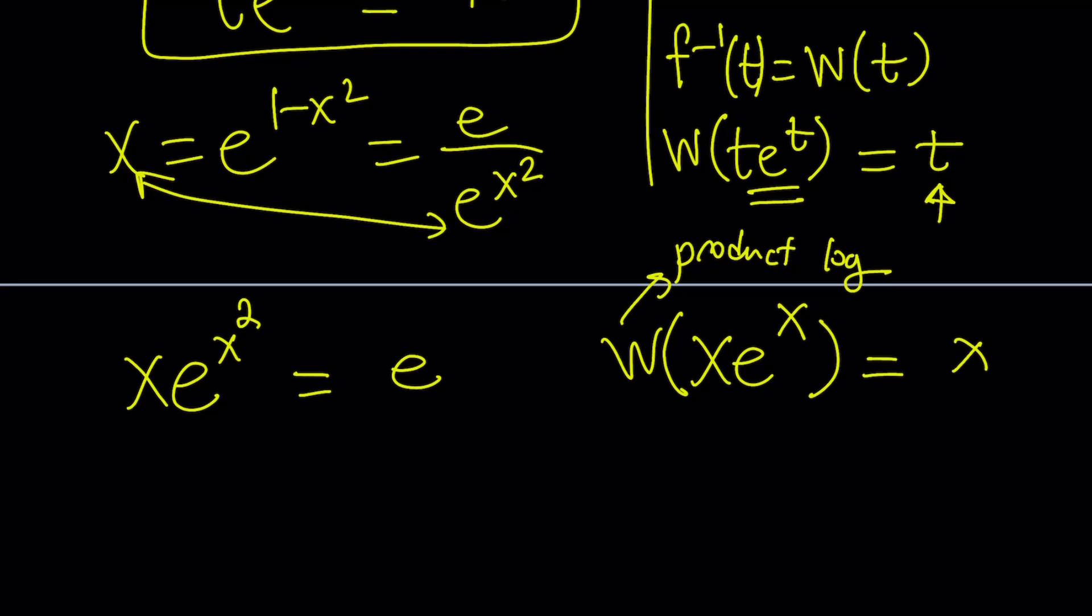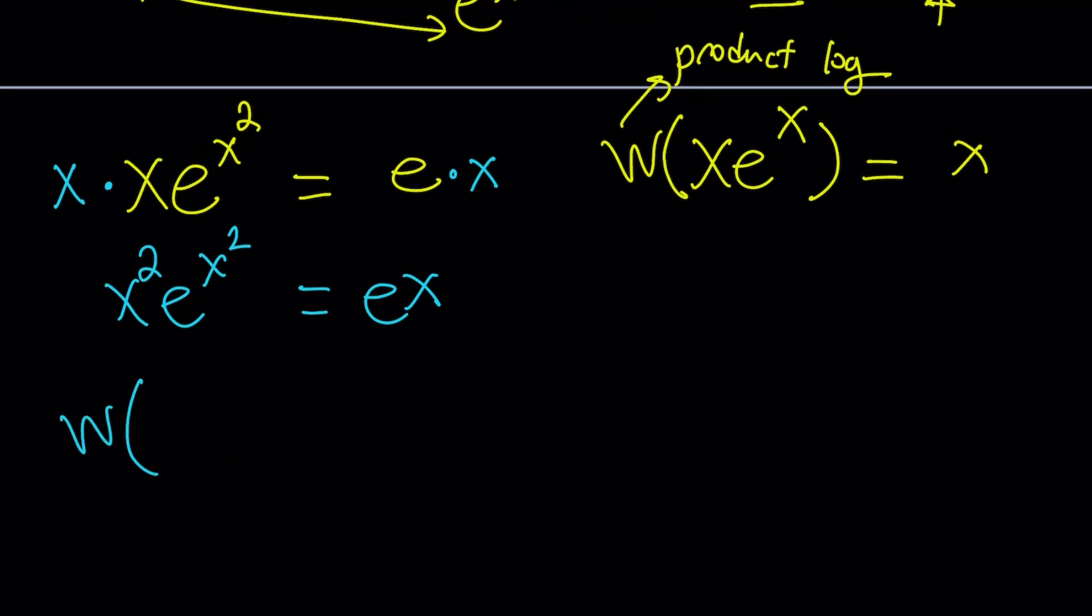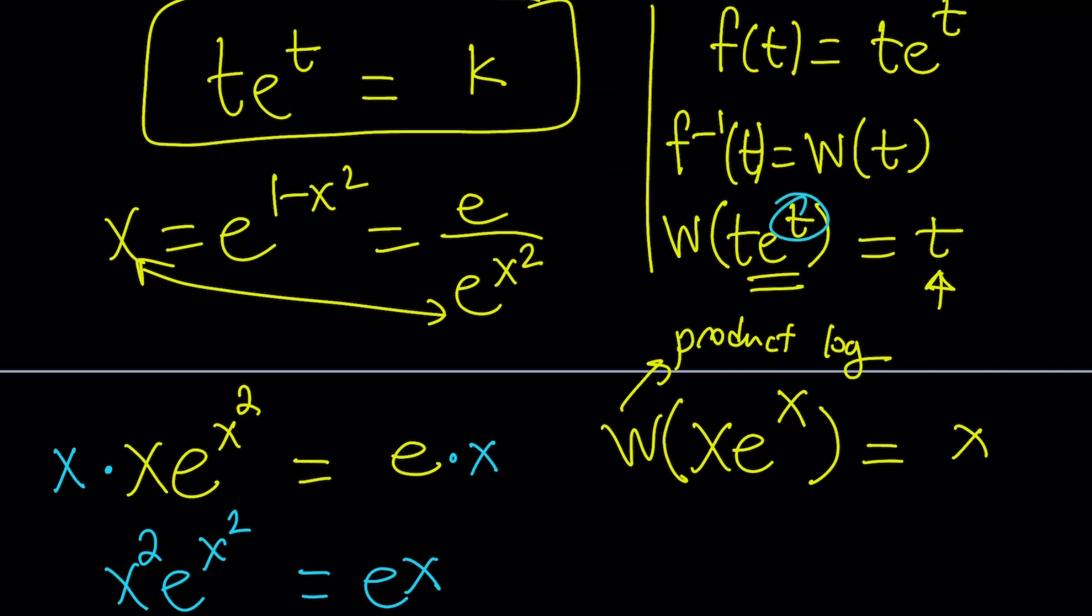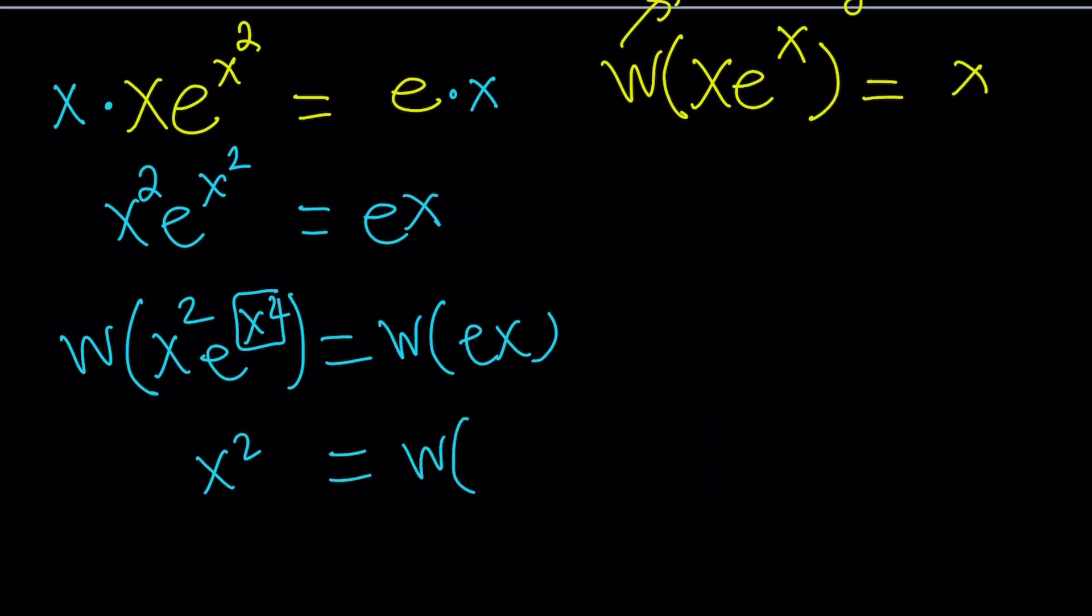Can I just multiply both sides by x? Because sometimes that's what we do. From here we're going to get x squared e to the x squared equals ex. If I apply W on both sides, the left hand side is going to give me x squared because W(x²e^(x²)) should give me x squared, but it's going to end up with W(ex). What is W(ex)? Can we evaluate it? That's a good question.